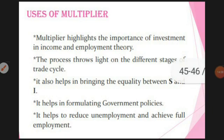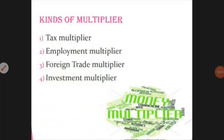The multiplier also helps reduce unemployment by guiding government policy toward achieving full employment in the society. The kinds of multiplier mentioned in the textbook include: tax multiplier, employment multiplier, foreign trade multiplier, and investment multiplier. These have appeared in exam questions, so briefly understanding each type is important.